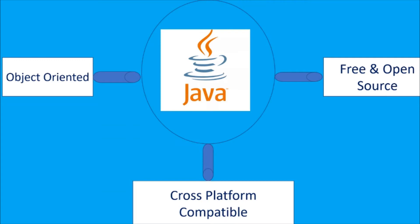Java is cross-platform compatible, which means code developed on one operating system will work on another operating system as well. For example, if you develop code on Windows 10 and your boss has a Linux or Mac operating system, the same code will work on your boss's laptop. Whether his laptop contains Linux or Mac, the same Java code will work on his computer as well.